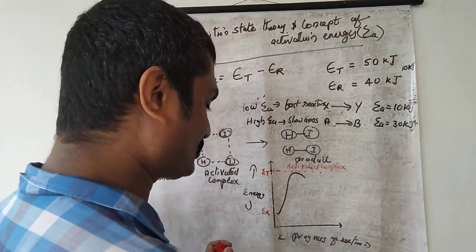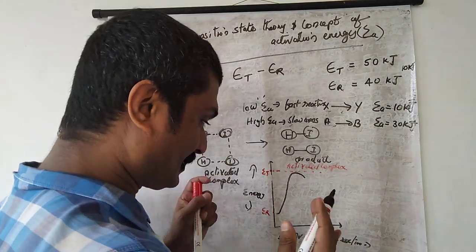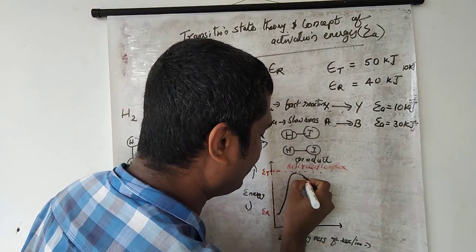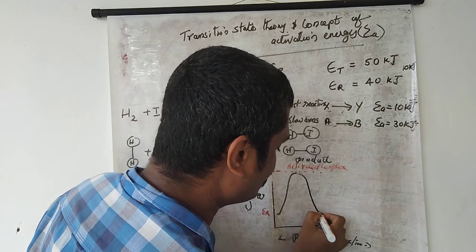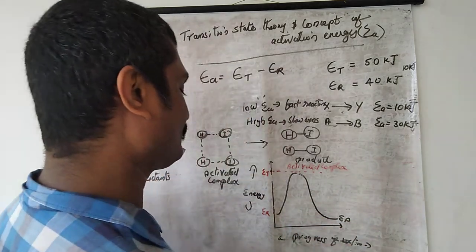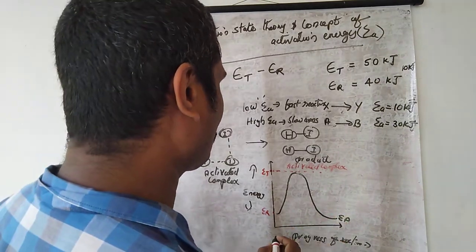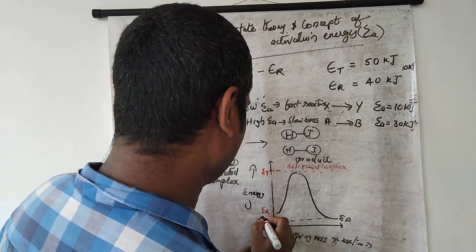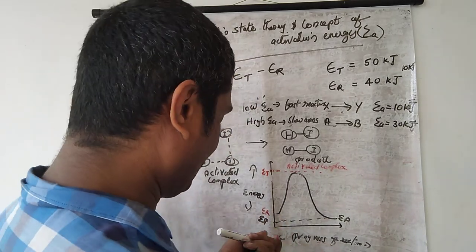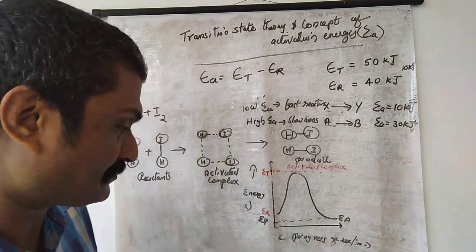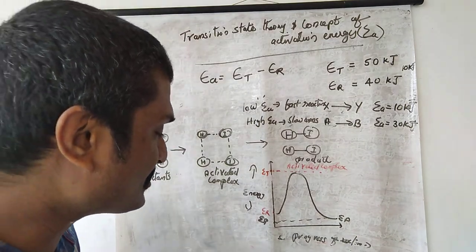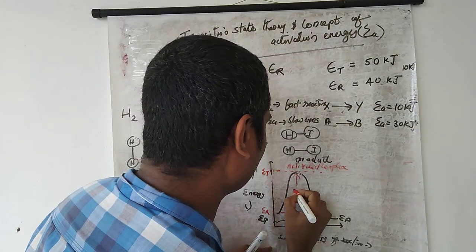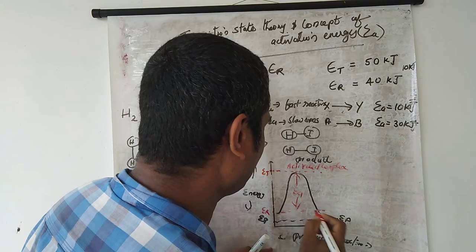The activated complex is highly unstable and immediately converts to product. Another value on the graph represents the kinetic energy of the products. The difference between the threshold energy (Et) and the average kinetic energy of the reactants (Er) represents the activation energy.